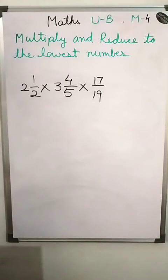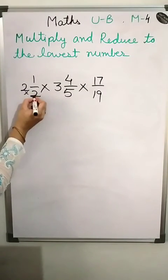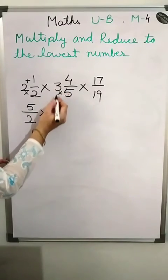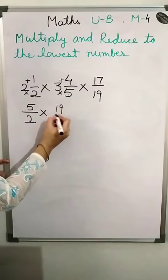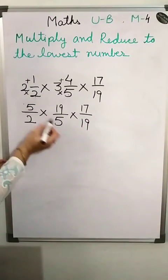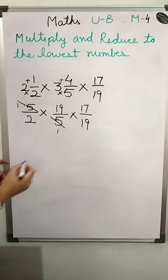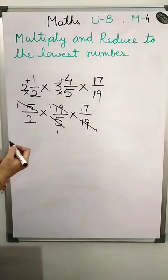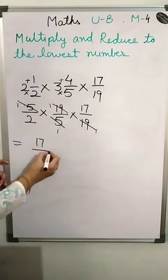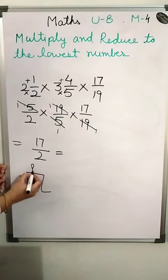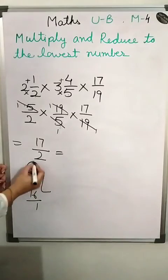The next question has mixed fractions, so convert them to improper fractions first. 2 into 2 is 4, plus 1 is 5 — giving 5 over some denominator. Then 5 into 3 is 15, plus 4 is 19. So the setup is 17 upon 19 after arranging. Check what can be cut: 5 and 5 are the same — cut them. 19 and 19 are the same — cut them. Left with 2 and 17 which cannot be cut. Multiply to get 17 upon 2. Denominator is less than numerator, so divide: result is 8 with remainder 1. The answer is 8 and 1/2.